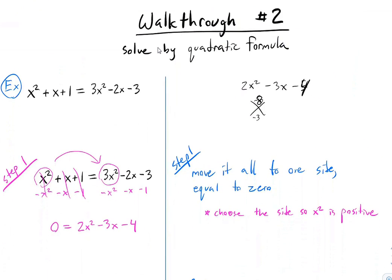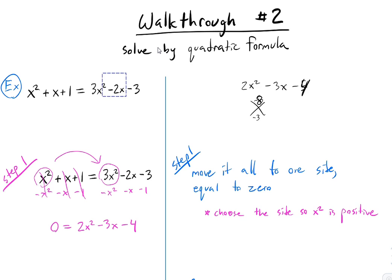Walkthrough number 2 — the quadratic formula. It says solve and I see a squared, so I know: everything to one side equals zero. Factor if I can; if I can't, use the quadratic formula. The signal that I knew which strategy to use is seeing the word 'solve' and an x squared.